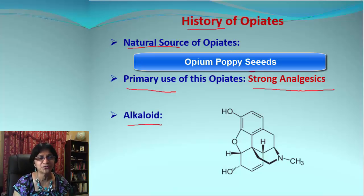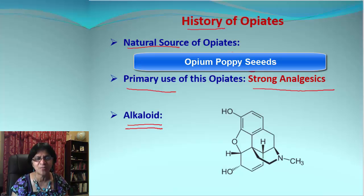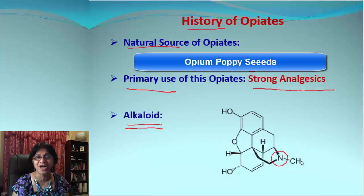Opiates belong to a family of compounds in organic chemistry called alkaloids. They have multiple rings in their structures and they all contain nitrogen.